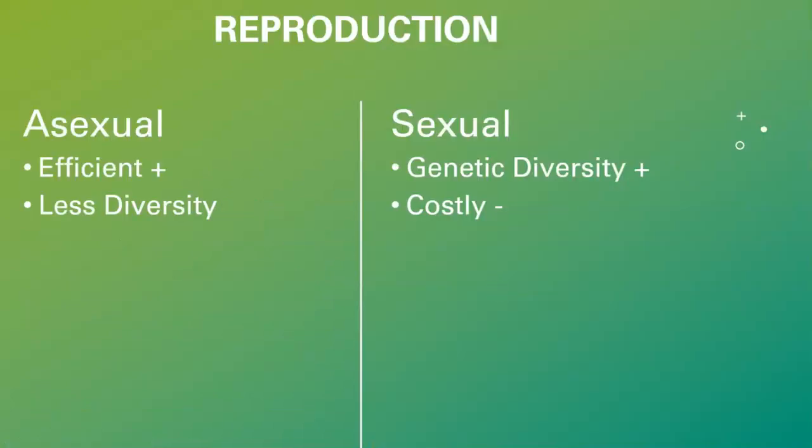Your first lecture is reproduction. You're going to want to focus on asexual versus sexual reproduction. Asexual is going to be efficient but will ultimately result in less diversity — think about single-celled organisms like bacteria. Sexual reproduction creates more genetic diversity, but it's more costly in terms of biological resources and effort. Think of things like mammals that do sexual reproduction.